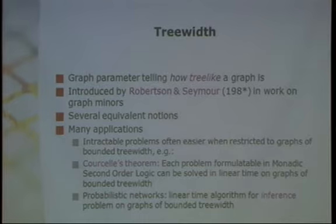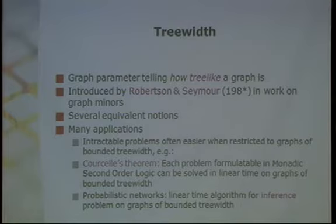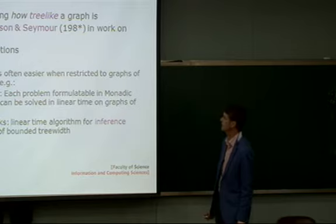Tree width is a parameter of graphs that tells more or less how tree-like a graph is. The notion of tree width as we nowadays use it was introduced by Robertson and Seymour in their work on graph minors, but actually if you look through the history there are a number of equivalent notions which predate this notion.